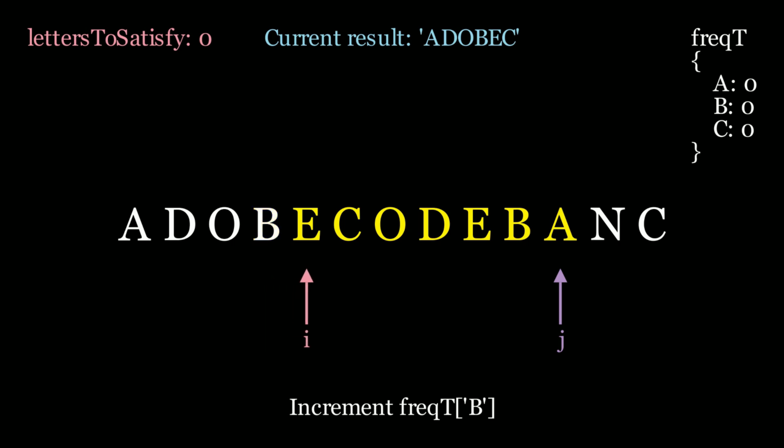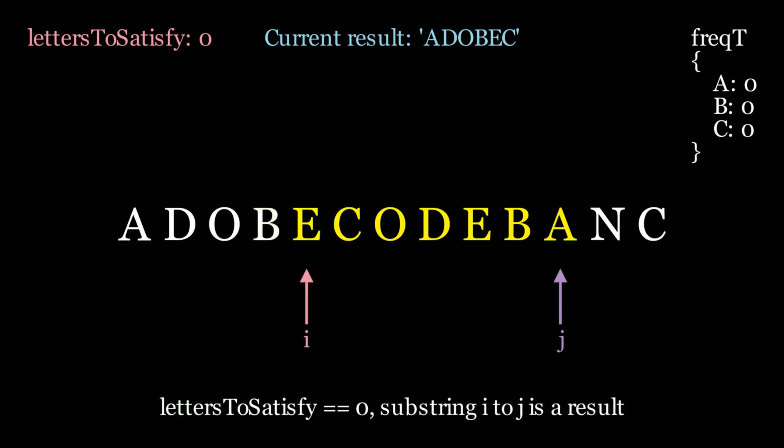Now we ask: is letters to satisfy still equal to 0? Yes, because in our hash map we still have all zeros — we still satisfied all three letters. We still have an a, a b, and a c in this current substring.